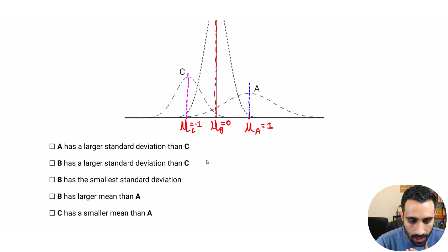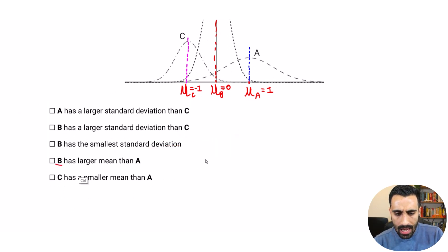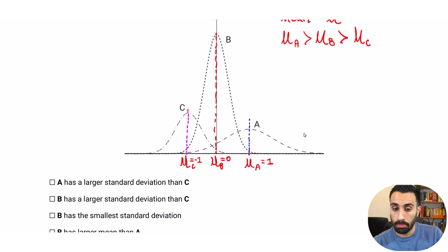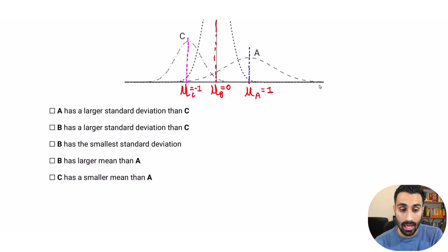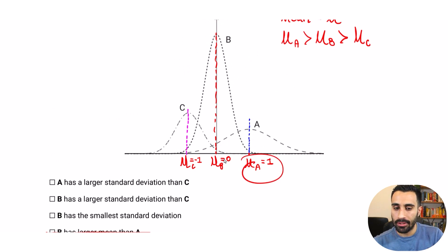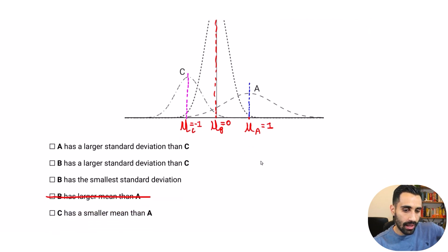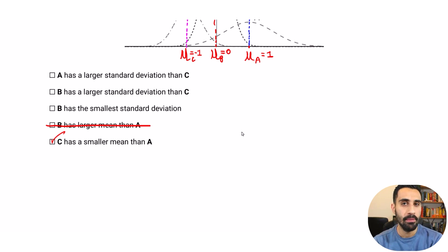Now let's evaluate the answer choices. 'B has a larger mean than A' — B is at zero, to the left of A, so that is false. 'C has a smaller mean than A' — C is at -1 and A is at 1, so yes, C has a smaller mean than A. That is true. We've already identified one correct answer covering the mean.